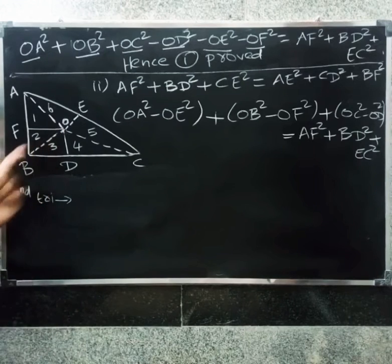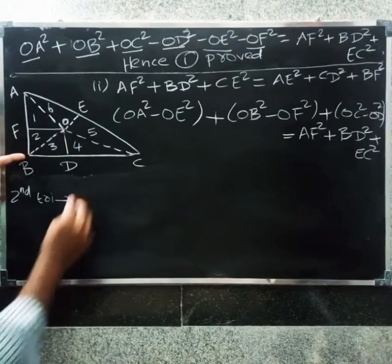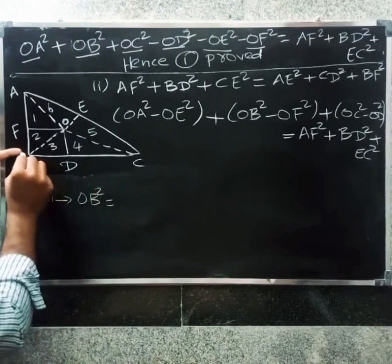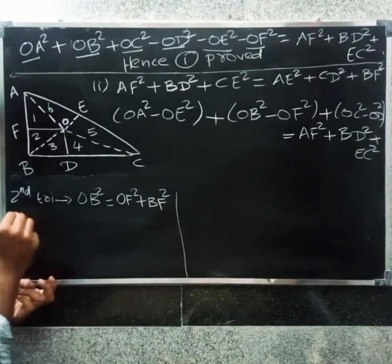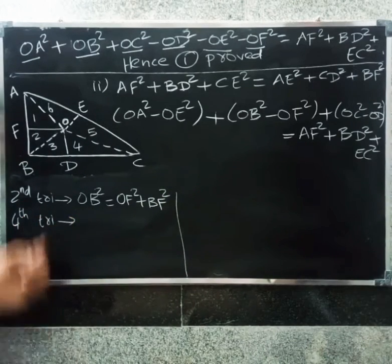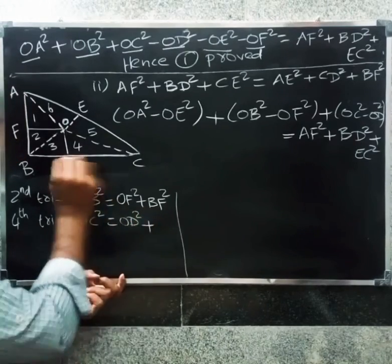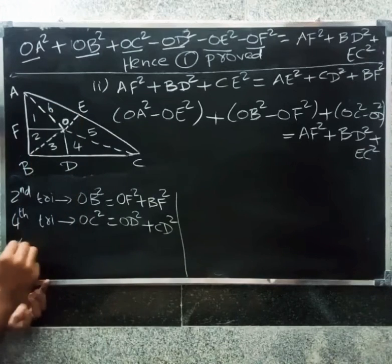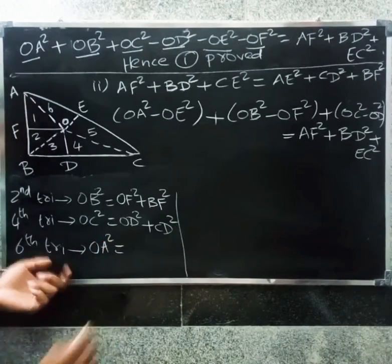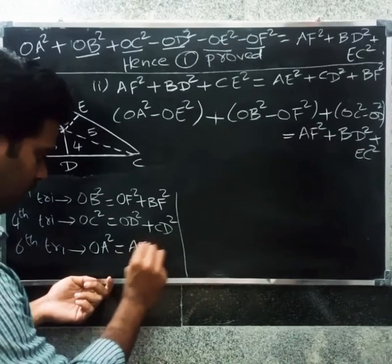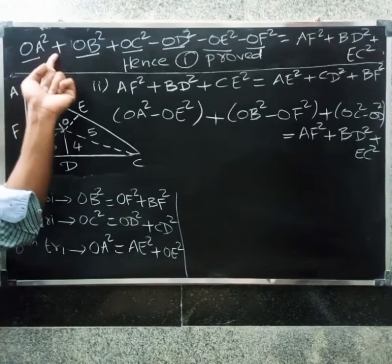Applying Pythagorean theorem to triangle 2: OB² = OF² + BF². For the fourth triangle: OC² = OD² + CD². For the sixth triangle: OA² = AE² + OE².